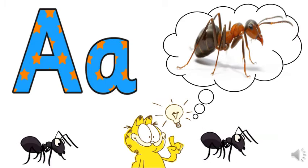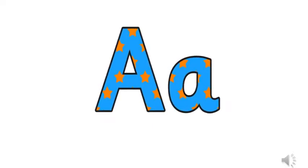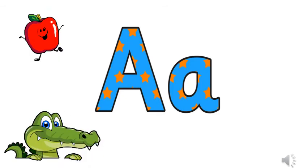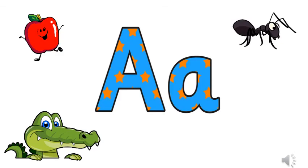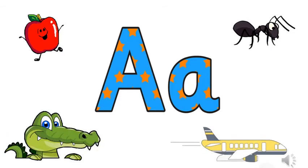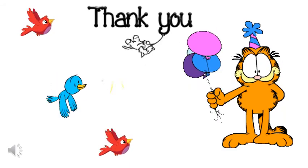Good job! Do you remember what are the things that start with letter A? Can you repeat it with me? A is for apple. A is for alligator. A is for ant. A is for airplane. Thank you!